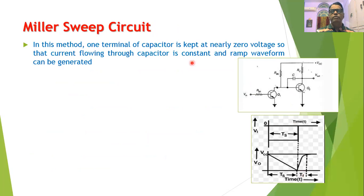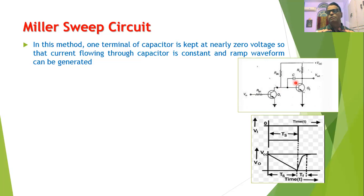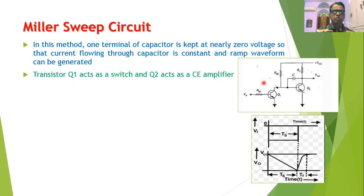Another method to generate sweep voltage is the Miller sweep circuit. In this circuit, one terminal of the capacitor is kept at zero level so that the current flowing through the capacitor is maintained constant, which improves linearity. The circuit uses two transistors, Q1 and Q2, with capacitor C connected between the base and collector of transistor Q2.